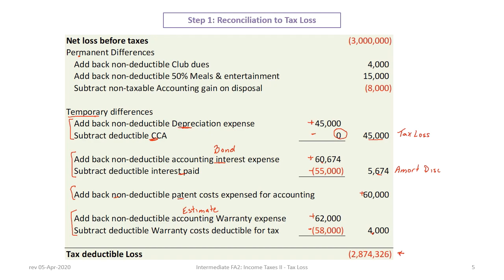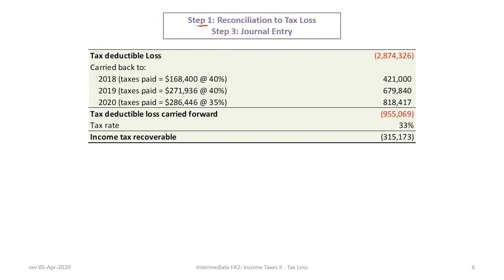Now we'll combine step one and step three to create the journal entry, since we have all the information. The tax loss is two million eight hundred seventy-four thousand three hundred and twenty-six dollars. We can carry that loss back to previous periods — up to three years — applying it to the oldest year first: 2018, 2019, and 2020. Taxes paid in 2018 were one hundred sixty-eight thousand four hundred at forty percent, implying taxable income of four hundred twenty-one thousand.